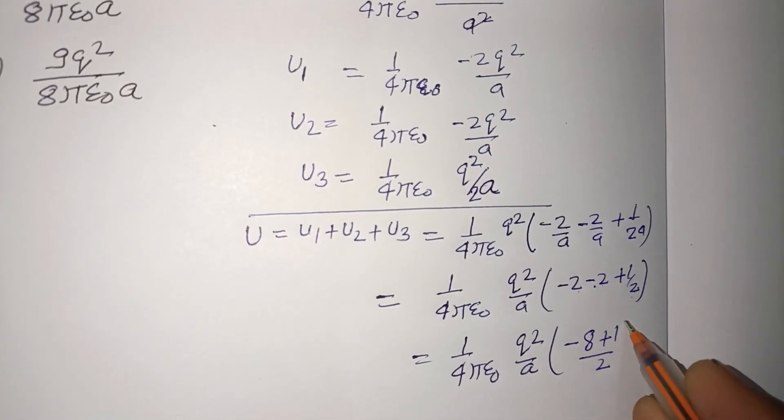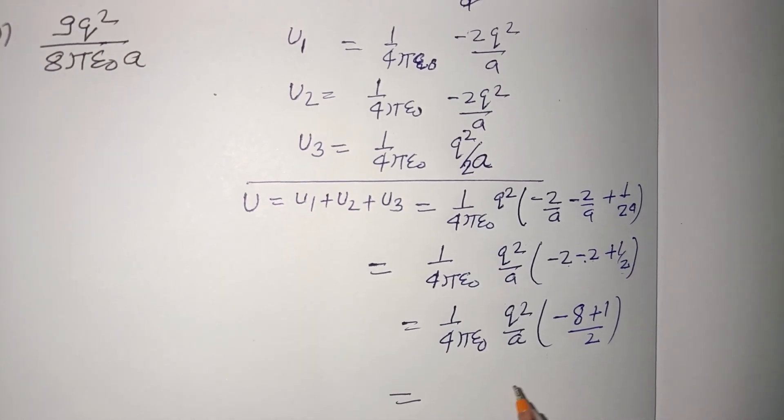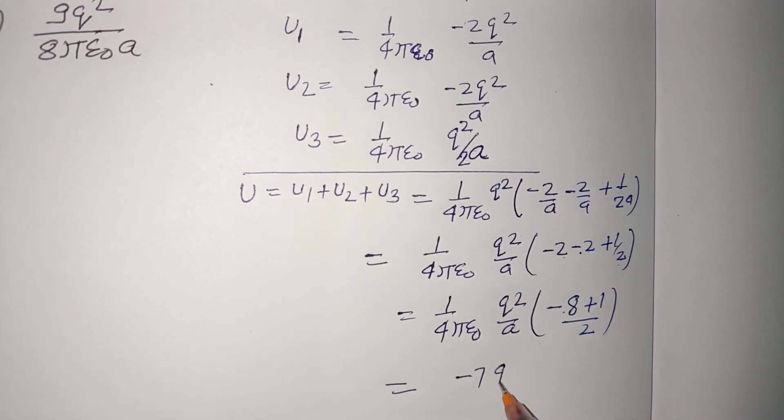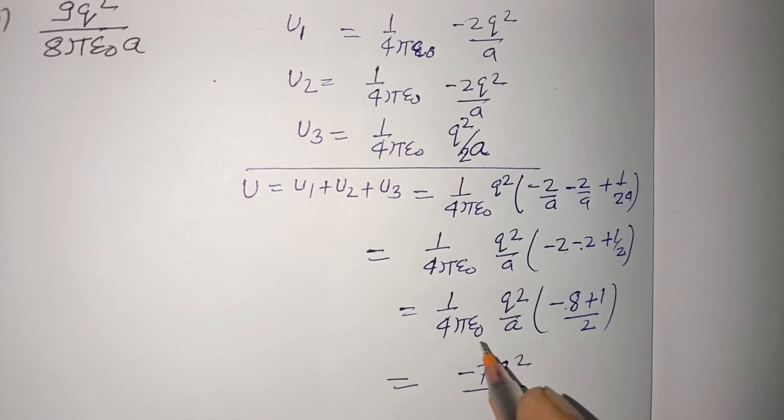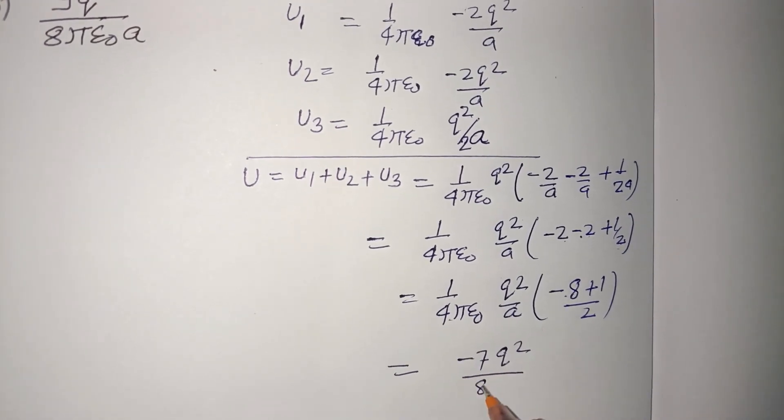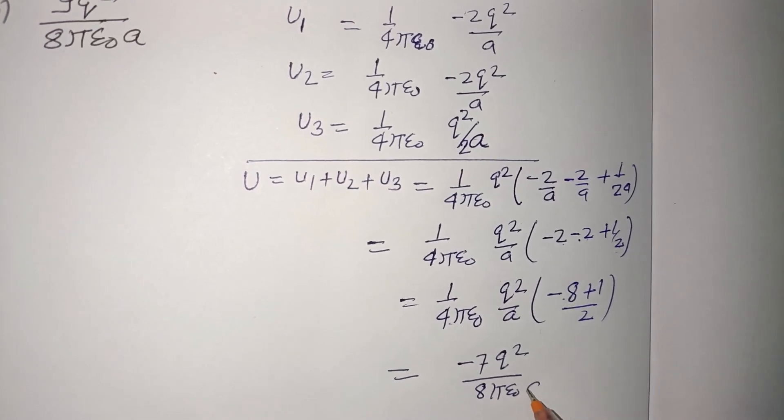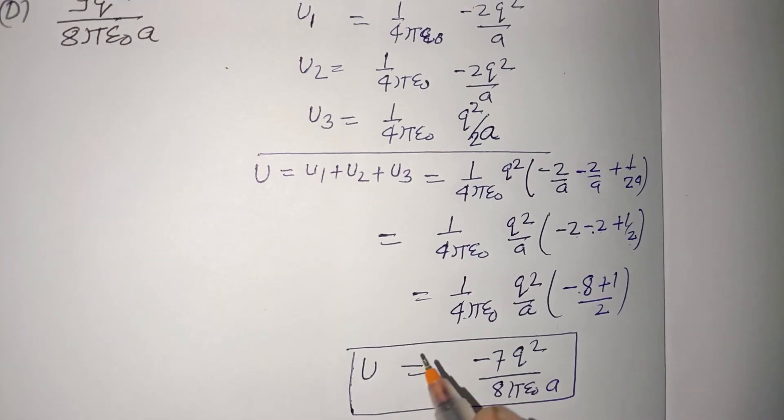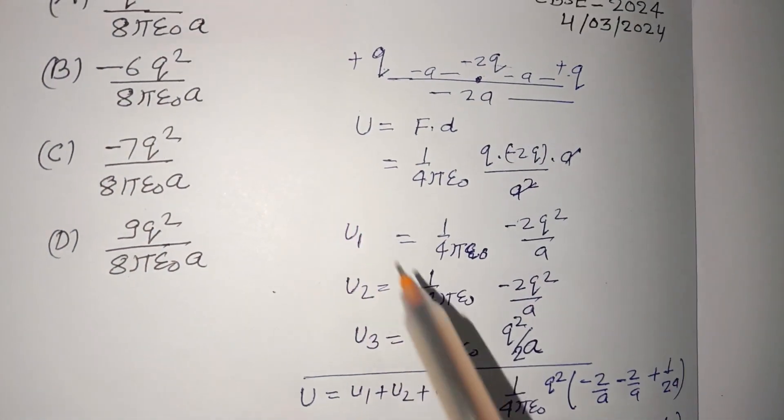So finally we get -8 + 1, this is -7Q² over 8πε₀A. So this is the energy of the system given here, the answer is -7Q² upon 8πε₀A.